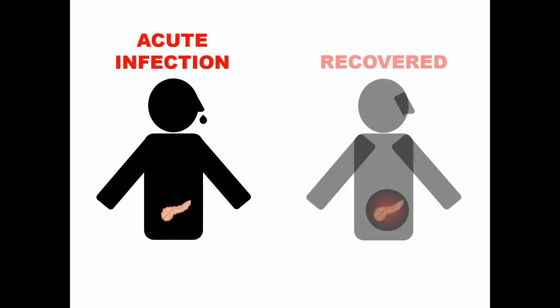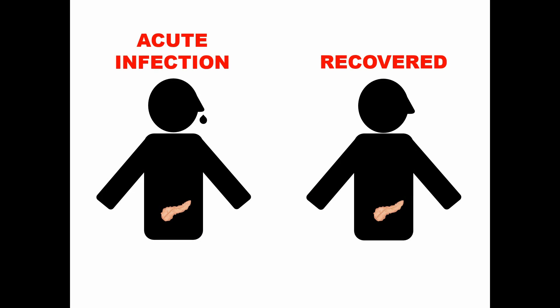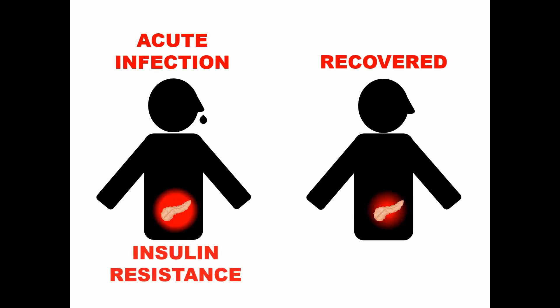We wanted to investigate whether infection impacts regulation of systemic glycemia. Therefore, we initiated a human study in which we recruited non-diabetic patients with acute influenza infection. Blood glucose and insulin levels were measured during the peak of infection and three months later, when they had recovered from their illness. We observed that infection was associated with much higher blood insulin levels, a clear sign of insulin resistance, though blood glucose levels were not increased. Our human study implicated that viral infection causes insulin resistance, but it was too small to determine whether viral infection also causes glucose intolerance, which is what we actually measure to diagnose diabetes. Therefore, we decided to switch to a mouse model.